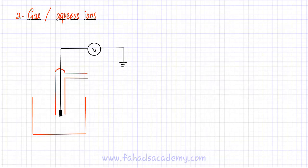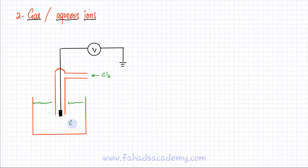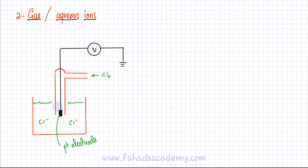The second type of electrode is created between a gas and its aqueous ions. In this example, Cl₂ gas is pushed into a tube, and the solution contains aqueous Cl⁻ ions. A platinum electrode is used here — platinum acts as a catalyst to establish the reversible reaction at a faster rate without disturbing it, and it also acts as an electrode. The reactions occur at the boundary between the gas and the solution.